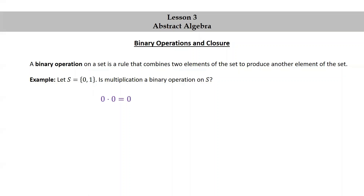Well, 0 times 0 is 0, 0 times 1 is 0, 1 times 0 is 0, and 1 times 1 is 1. Notice that the outputs are all 0s or 1s. So the answer is yes — multiplication is a binary operation on the set S.